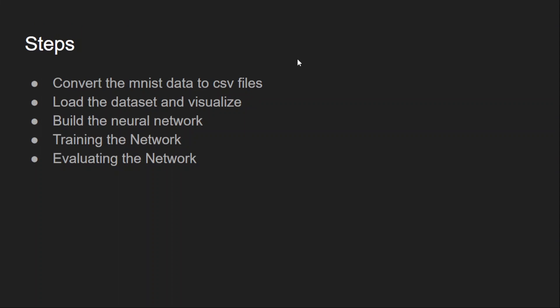These are the steps I will follow while doing this project. I have already downloaded the ubyte files and kept them on Google Drive. I will convert those ubyte files into a CSV file, where each line corresponds to one image's data. Then we will load the data from the CSV file and visualize it. Later we will build the neural network and write the functions for both training and evaluating the network.